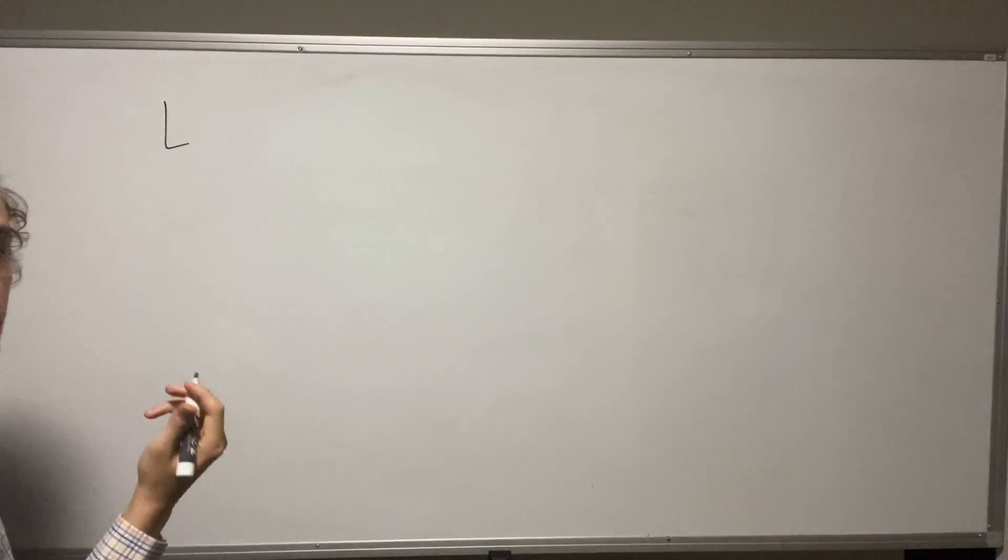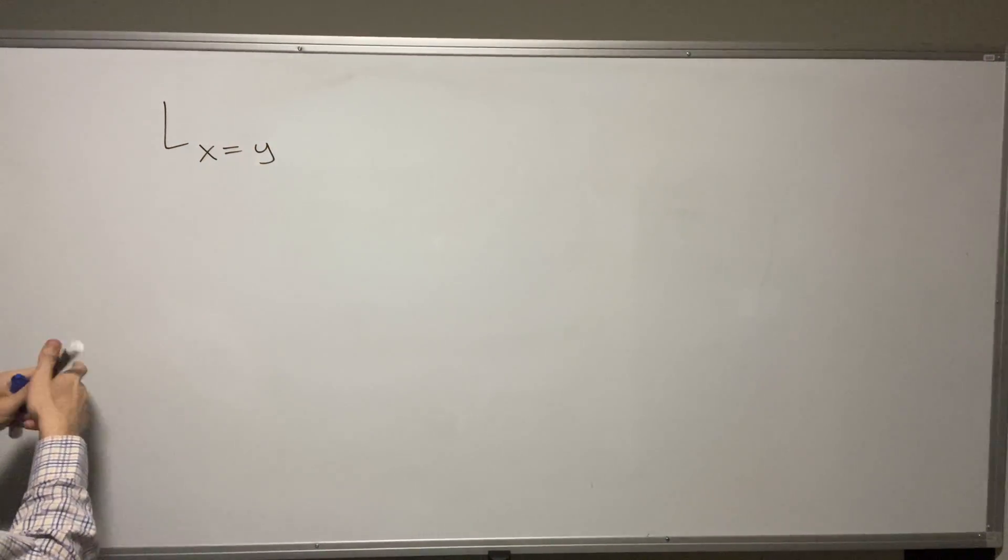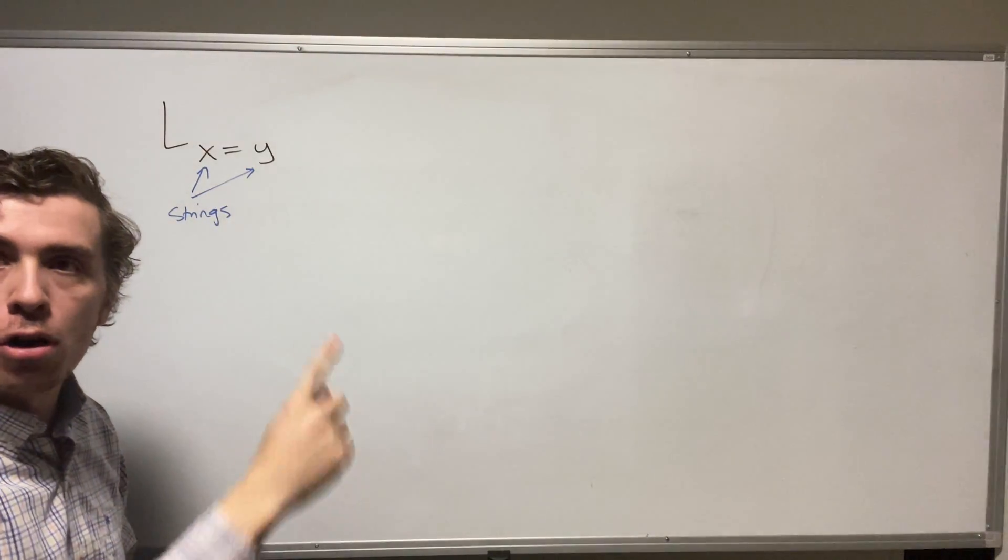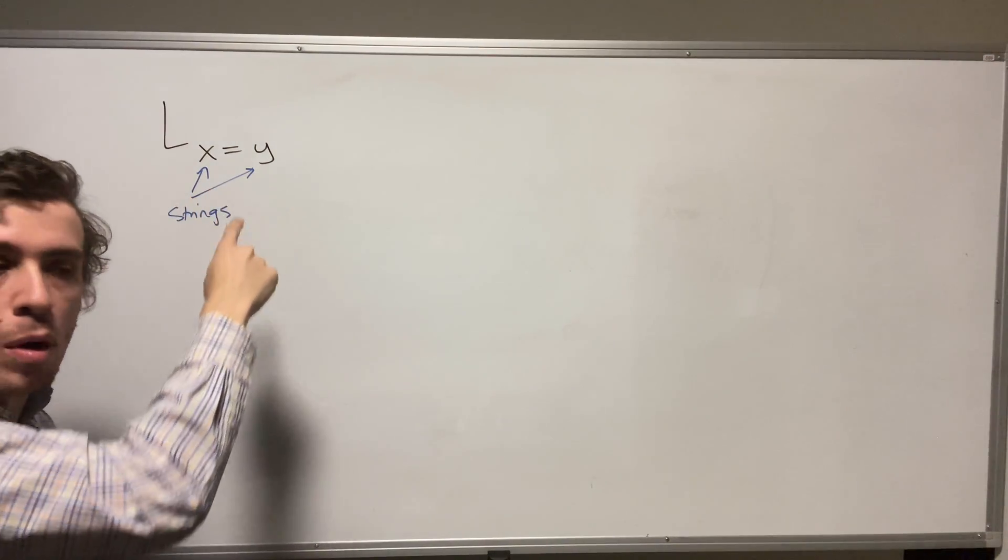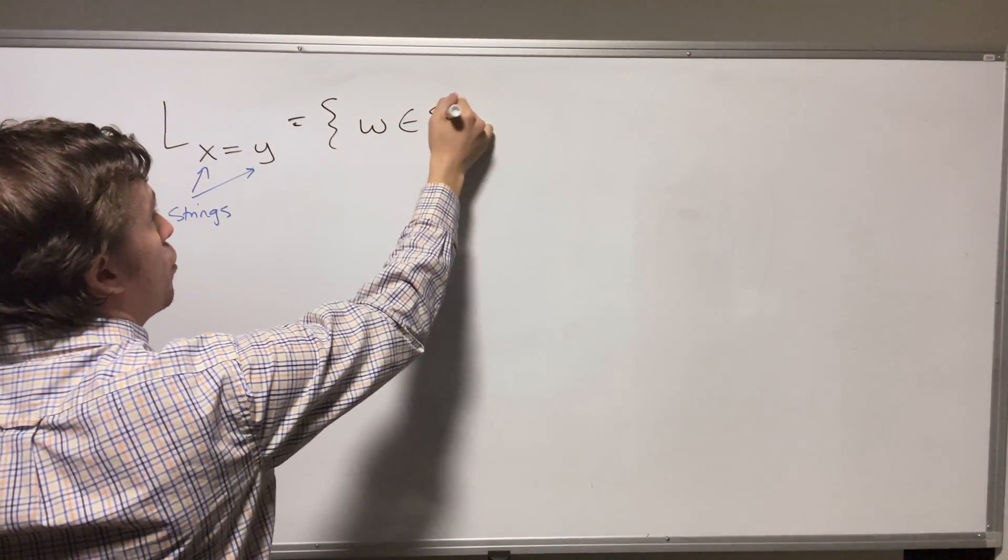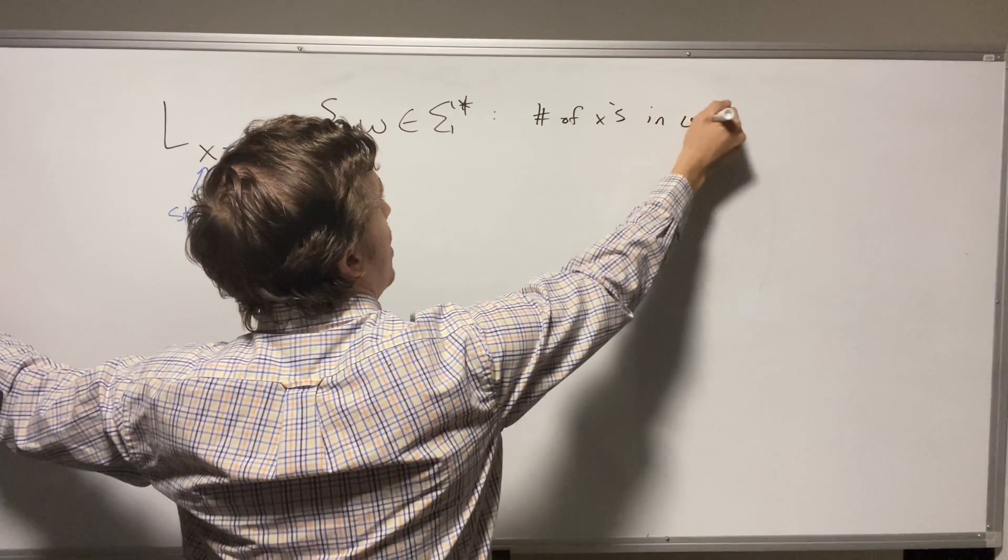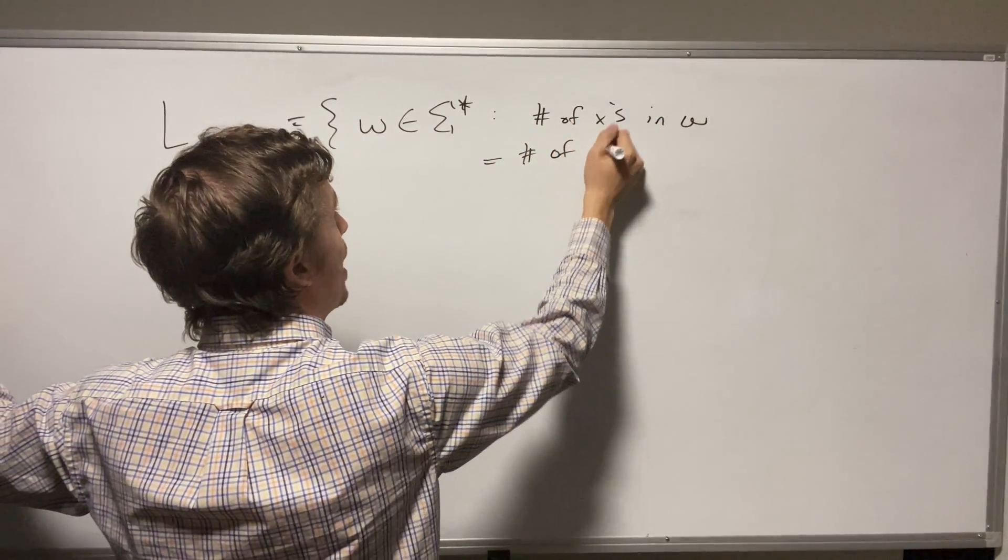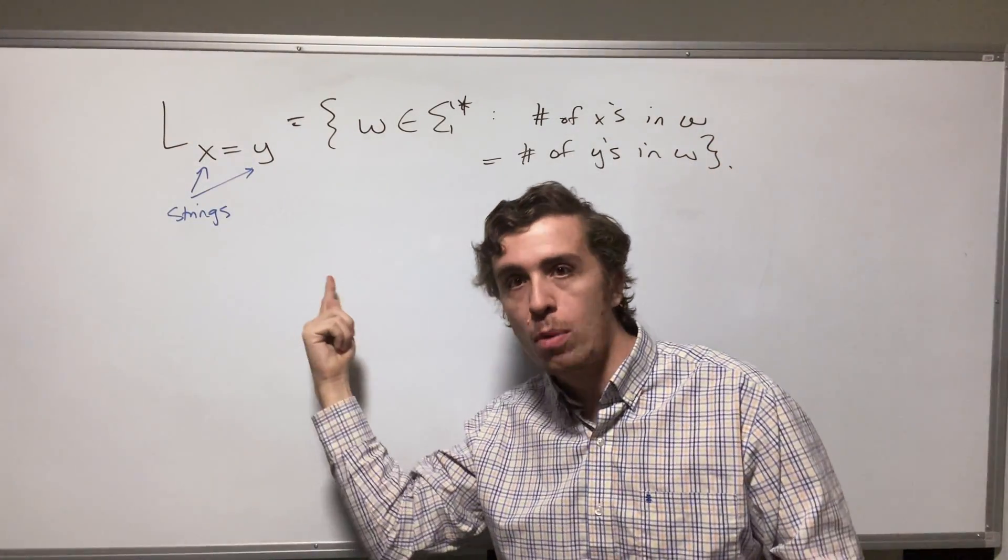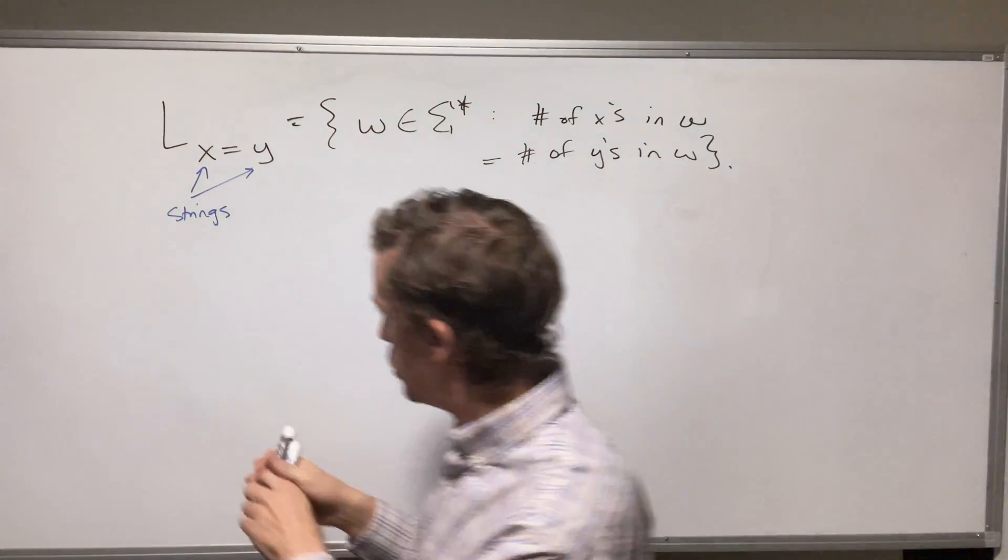It was this problem. So I'm going to consider a language here and I'm going to call it L sub X equal Y. And here X and Y are strings. So what we're going to do is we're going to consider all strings that have an equal number of X's and Y's in them. So formally what this is saying is that we're looking at all strings W in some alphabet star, such that the number of X's in W equals the number of Y's in W. So that's the language setup.